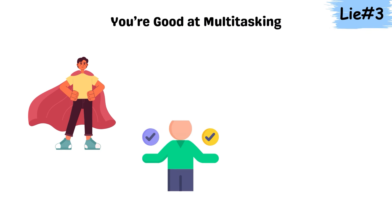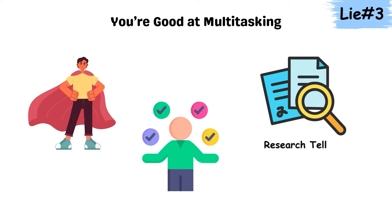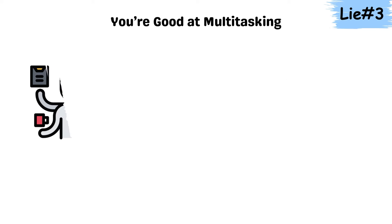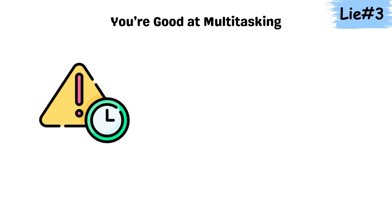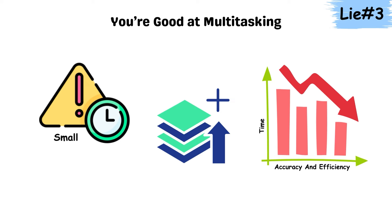Lie 3. You're good at multitasking. Most people believe they can handle multiple tasks at once effectively, but research tells a different story. When we switch between tasks, our brain takes a few milliseconds to refocus, creating something called task-switching costs. This micro-delay might seem small, but it adds up, decreasing both accuracy and efficiency.